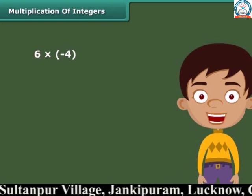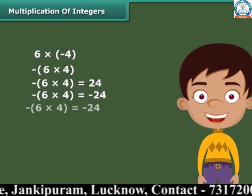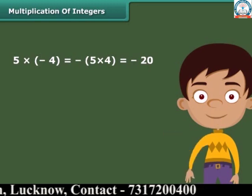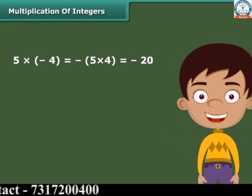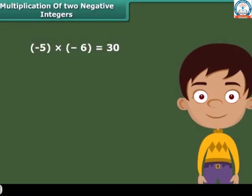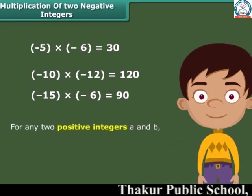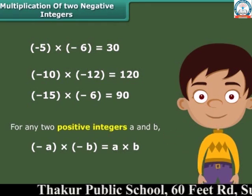To find the product of a positive and a negative integer, multiply the absolute values and then put a minus sign before the product. For example, minus 6 times 4 gives minus 24. Similarly, 5 times minus 4 equals minus 5 times 4, which equals minus 20. The product of two negative integers is a positive integer — we multiply the two negative integers as whole numbers. In general, for any two positive integers A and B, minus A times minus B is equal to A times B.